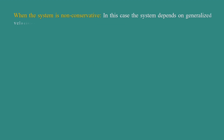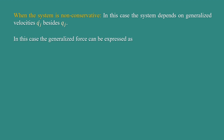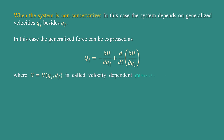When the system is non-conservative, the system depends on generalized velocities q_j-dot besides q_j. In this case, the generalized force can be expressed as Q_j equal to minus del U/del q_j plus d/dt of del U/del q_j-dot, where U is a function of q_j and q_j-dot, and is called the velocity-dependent generalized potential for a non-conservative system.